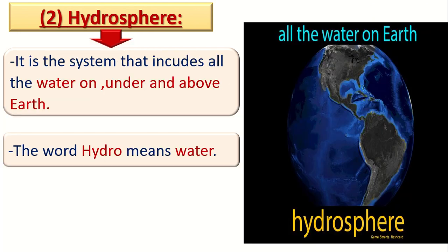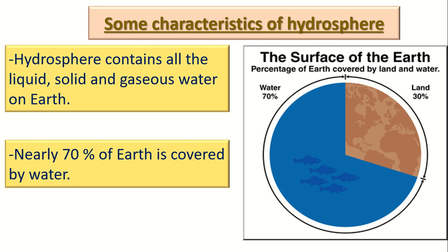Now let's talk about the hydrosphere. The hydrosphere is the system that includes all forms of water on, under, and above the Earth. The word 'hydro' means water. The hydrosphere contains not only liquid water — it also contains solid and gaseous water.